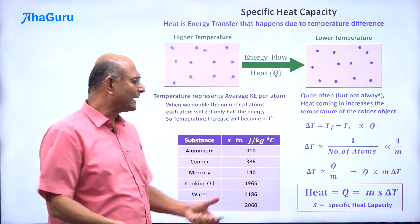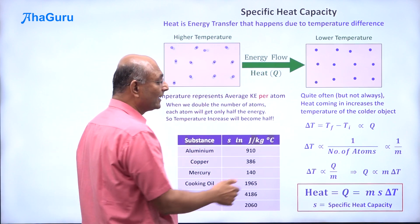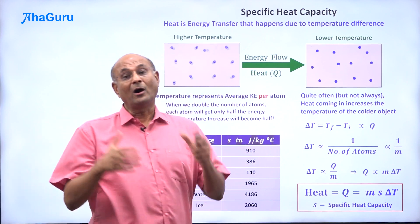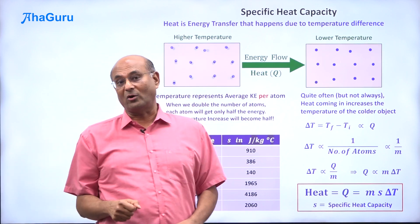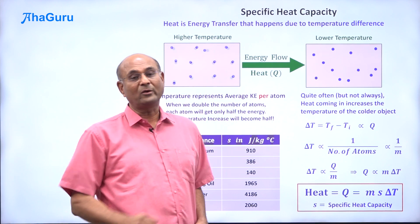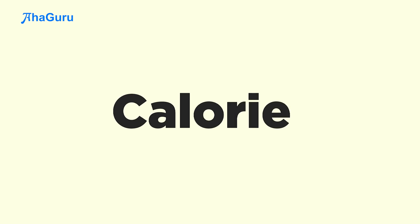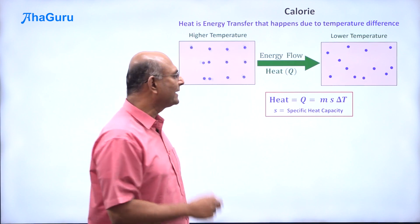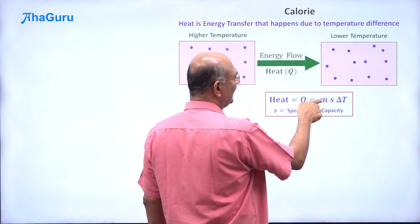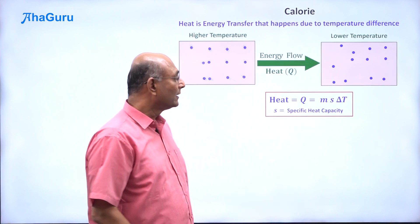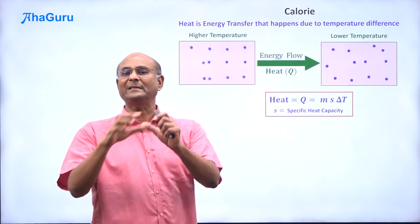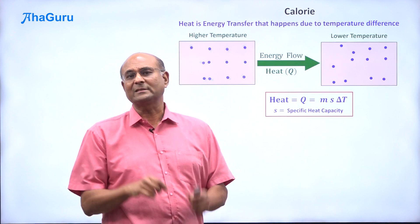So what do we do with specific heat capacity? Once you know the specific heat capacity of an object, the temperature increase, and the mass of the object, you can easily calculate how much heat has flowed into that object. Remember: Q = MsΔT, where M is the mass, S is the specific heat capacity of the material, and delta T is the temperature increase that happens because the heat is flowing in.